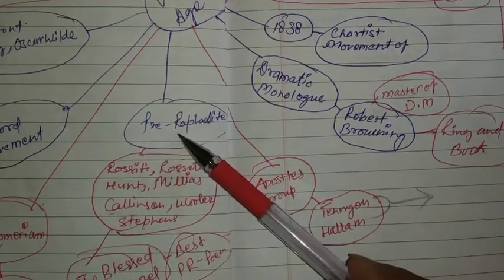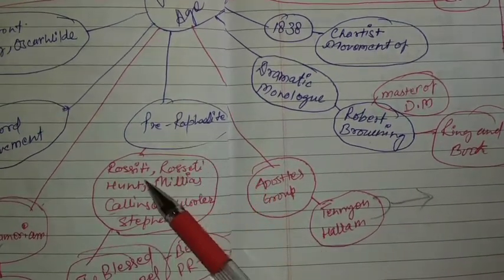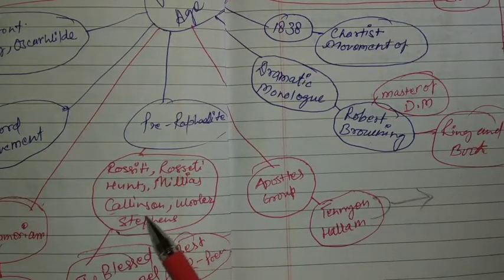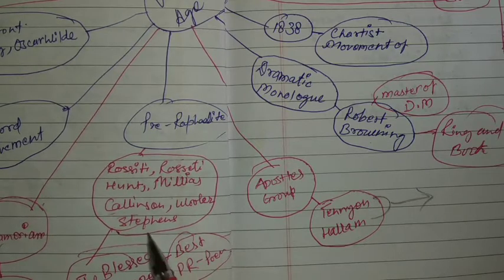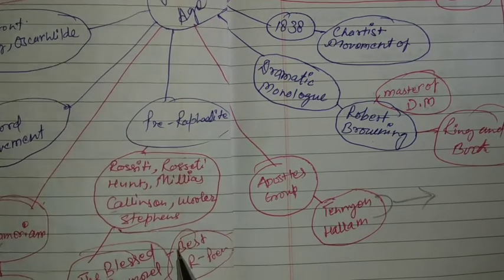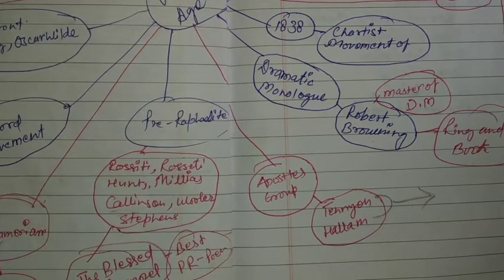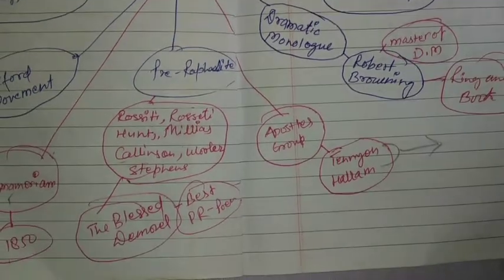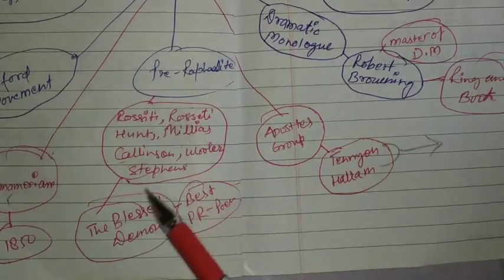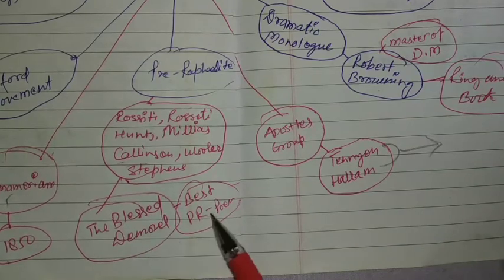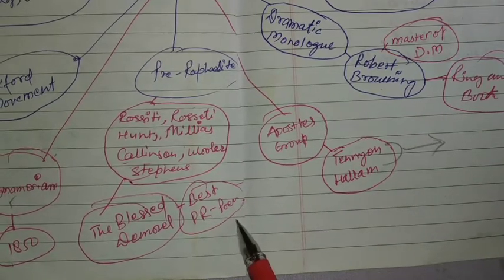The Pre-Raphaelite Brotherhood included Rossetti, Hunt, Millais, Collinson, Woolner, and Stephens. These were the writers of this group. The Blessed Damozel is considered the best Pre-Raphaelite poem.